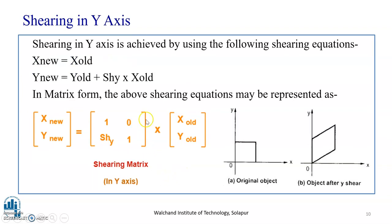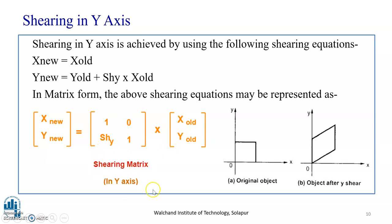Now we see shearing in the y direction. Shearing in the y axis is achieved using the following equation: x-new equals x-old — the x dimension does not change — whereas y-new equals y-old plus shy into x-old. You can see that the object after y-shear is changed compared to the original object. In matrix form, this is represented as: [x-new, y-new] = [1, 0; shy, 1] × [x-old, y-old]. This is the shearing matrix in the y direction.